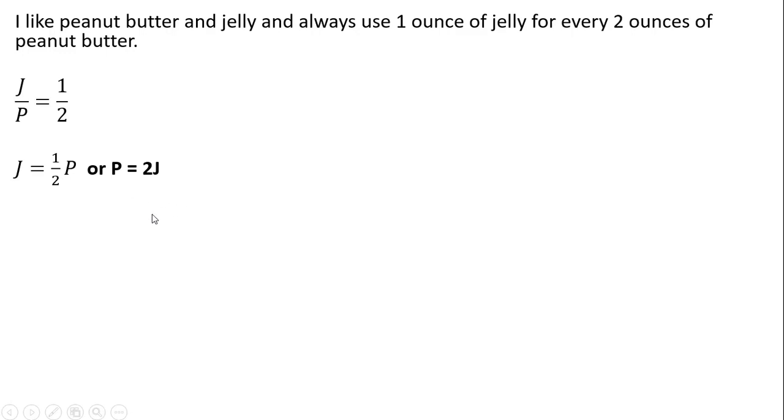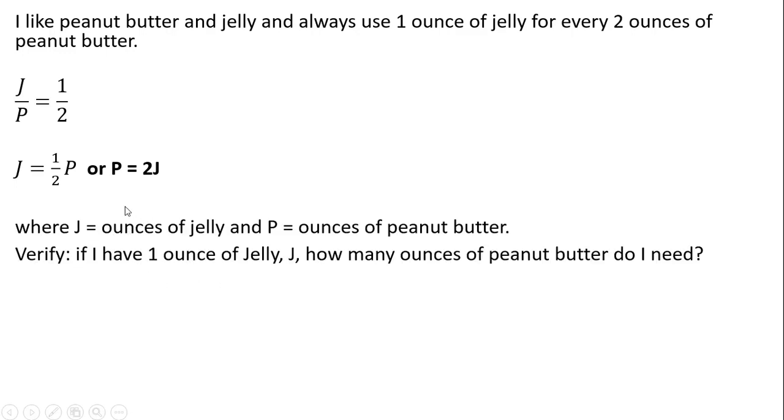So we could verify this P equals 2J is legitimate. If I have one ounce of jelly, how many ounces of peanut butter do I need, given I want to consume in this fixed proportion? Plugging in one for J, you would need two ounces of peanut butter. So this, too, is consistent with our word problem.